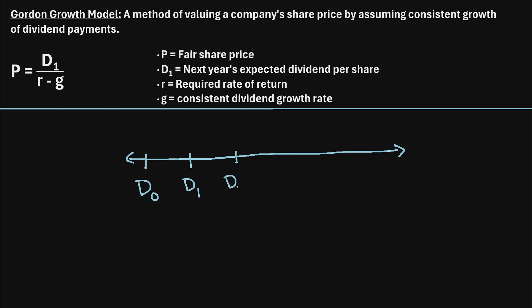Two years from now, let's call it dividend sub two. Then three years from now, they're going to pay another dividend — let's call it dividend sub three. And we're just going to go on and on in perpetuity, assuming that this company is always paying a dividend every year.